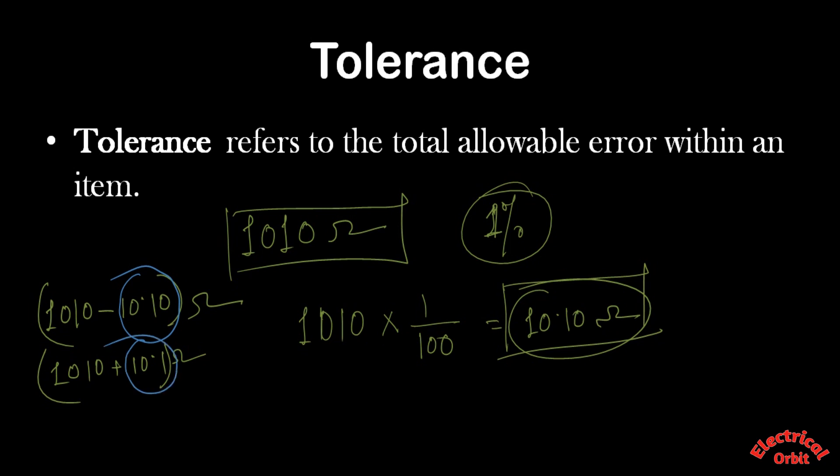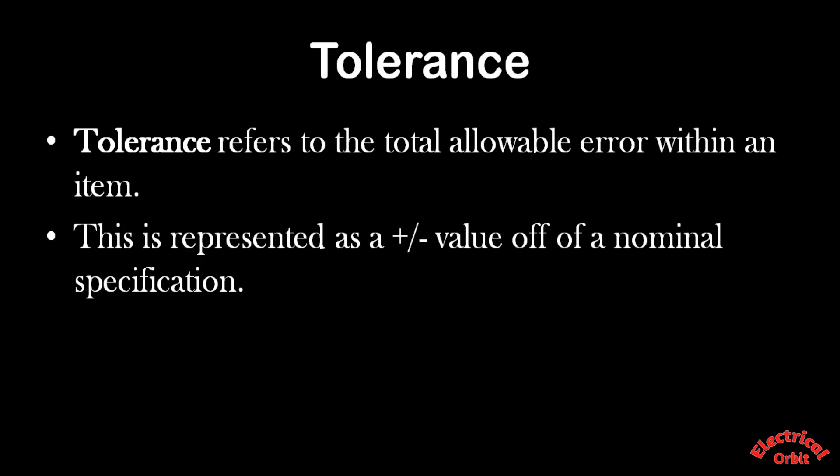That means this ohm meter has plus minus 1% of tolerance. So the tolerance is the range by which the reading of any instrument can vary. As I have said, this tolerance is expressed in plus minus term, that means both in increasing or decreasing form. The result we are getting may be higher or lower compared to the true value.